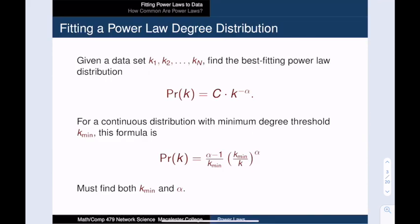Given our degree data, we want to find the best fitting power law distribution. Today we will talk about fitting a continuous power law distribution to data with a lower threshold after which the power law kicks in. Note that we don't know the exponent alpha or the threshold kmin, so our fitting process must find both.